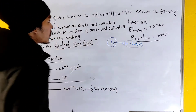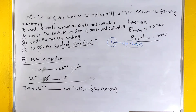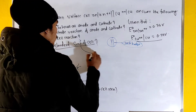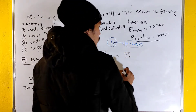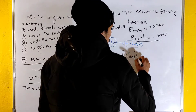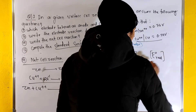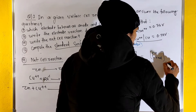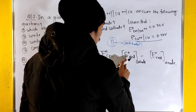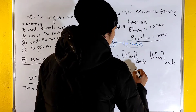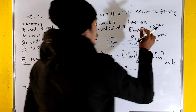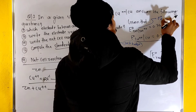Now, compute the standard EMF of the cell. We use the formula: E°cell = E°cathode (reduction) minus E°anode (reduction). So E°cell = 0.34 minus the reduction potential at the anode.